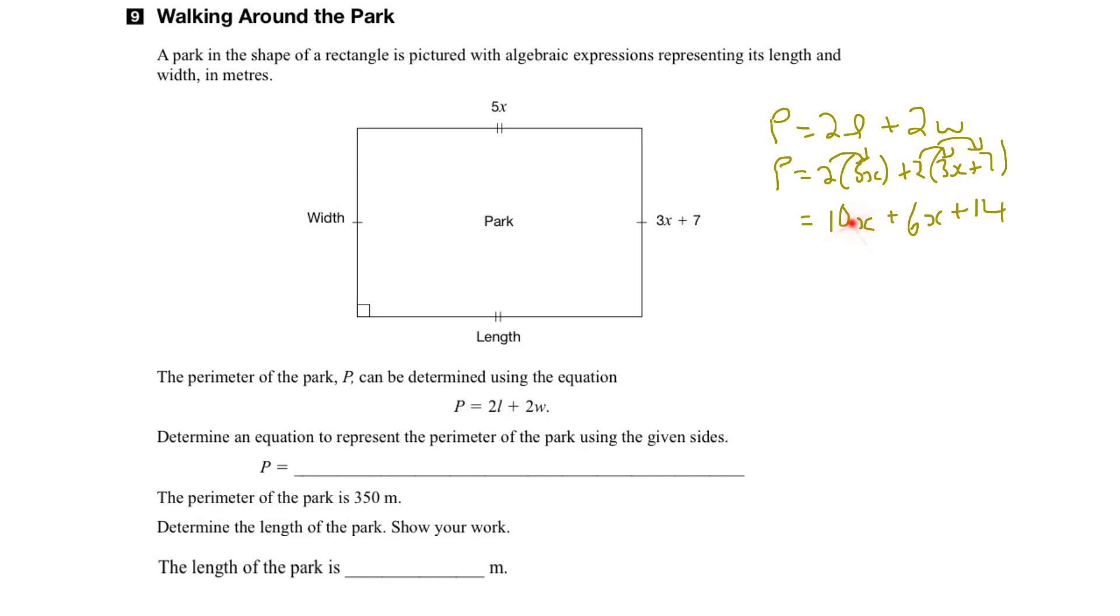Next we collect like terms, so 10x and 6x are like terms. So what we end up with here is 16x plus 14. So there we have a simplified equation of the perimeter that they ask for. We can write that in. The perimeter would be 16x plus 14.